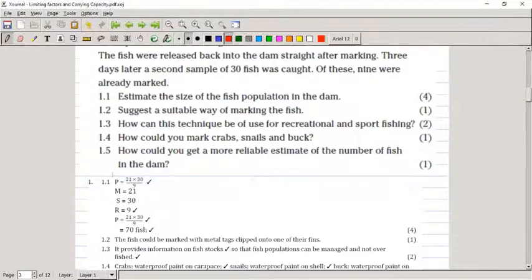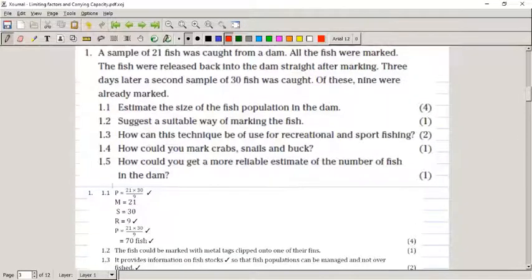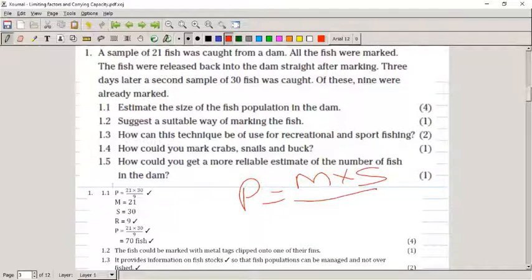Let's take a look now at Activity 11. I used the mark-recapture method. In this question, a sample of 21 fish from a dam - all the fish were marked. The fish were then released back into the dam after marking. Three days later, a second sample of 30 fish were caught. Of these, nine were already marked. You use the formula P equals M times S divided by T.